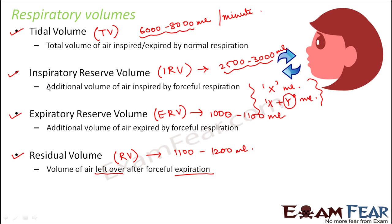So these are all the respiratory volumes. If you see, in all of these they are nothing but the amount of air — whether it is the amount of air during normal respiration, the amount taken in or given out during forceful respiration, or the amount left over after forceful expiration. So we are not talking about the capacity of the lung, or what is the maximum a human being can take in or give out. In the next video we will continue.